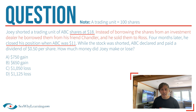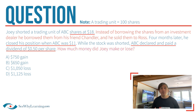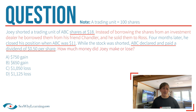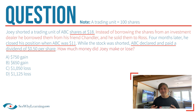There is more to consider, because while the stock was shorted, ABC declared and paid a $0.50 per share dividend. And you're being asked how much money did Joey make or lose. I've added a sentence to this scenario that you're not going to see on exam preparation tools — it's in red. It says that instead of borrowing the shares from an investment dealer, he borrowed them from his friend Chandler and sold them to Ross.